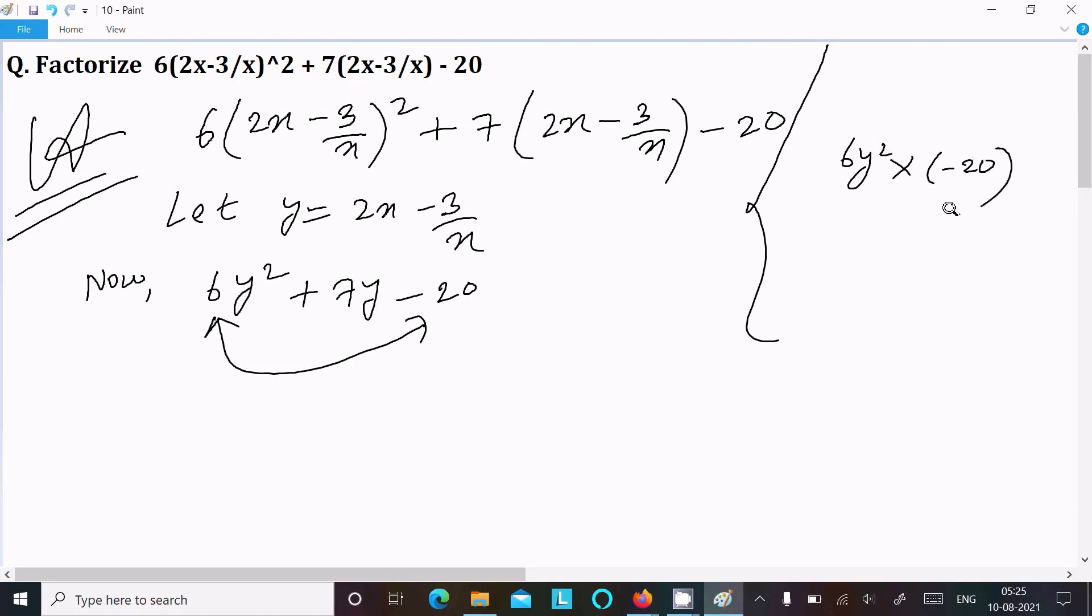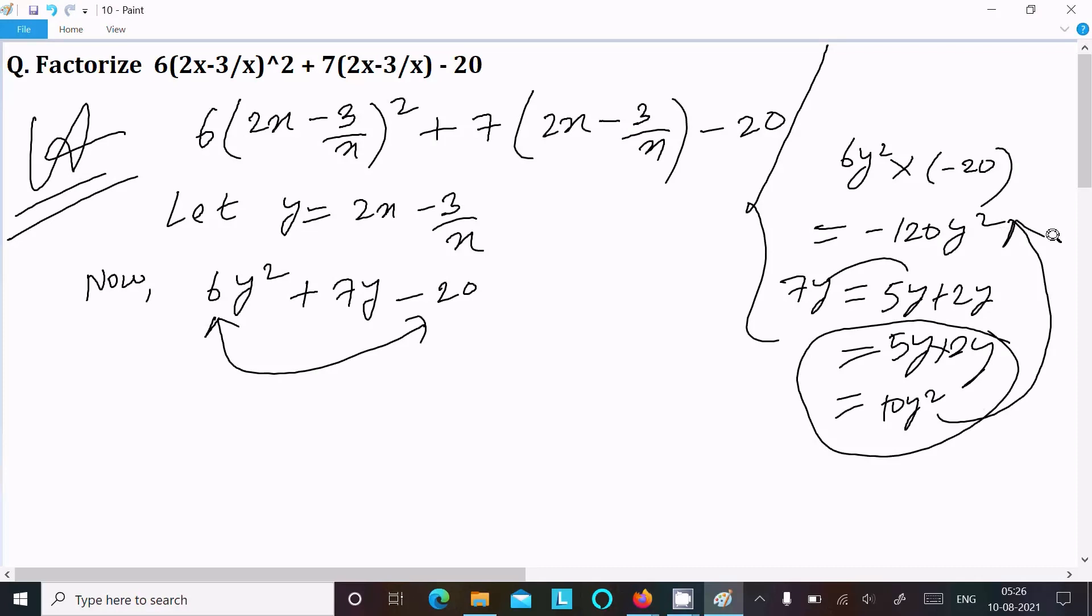And take the middle term, so 7y we can write 5y + 2y. So if we add it equals 7y, and if I multiply 5y into 2y it equals 10y². So 10y² does not equal -120, so we cannot take this combination.